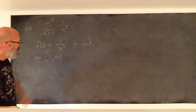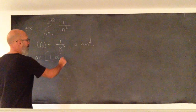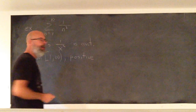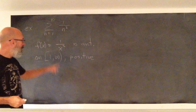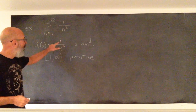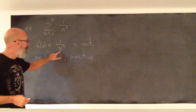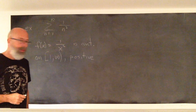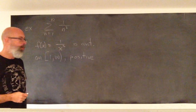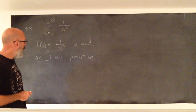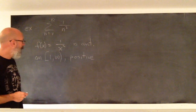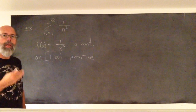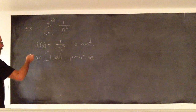It's positive, because the numerator is 1, which is positive. The denominator is something squared, which is positive as well. And consequently, the whole thing is positive. And finally, we need to check for decreasing. Is this a decreasing function?